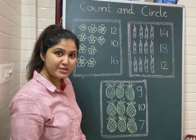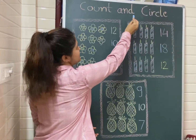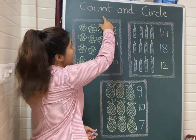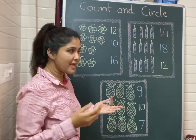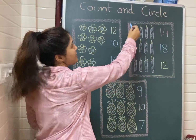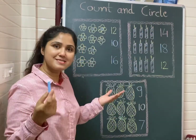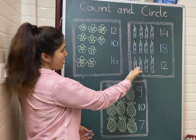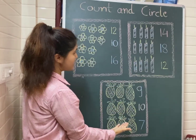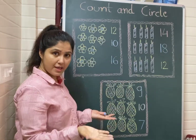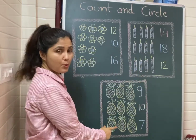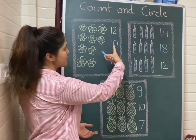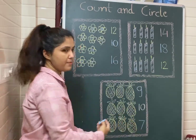What we are going to do? Count and circle. Yaani aapko pahle counting karna hai — means ginti — and after that you have to circle. Now we need to count the number of objects given in the particular group. After that we need to circle the correct number.